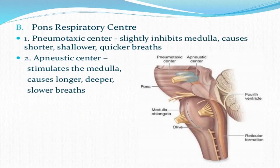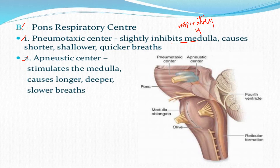The pons contains two respiratory centers: the pneumotaxic center and the apneustic center. The pneumotaxic center inhibits the medulla's inspiratory rhythm, causing shorter, quicker, or shallower breaths. The apneustic center functions in reverse — it stimulates the inspiratory rhythm in the medulla to cause longer, deeper, and slower breaths.